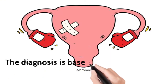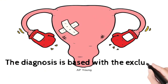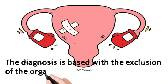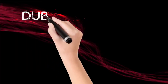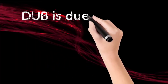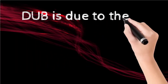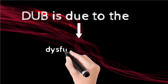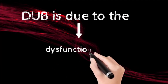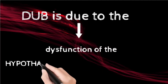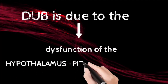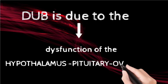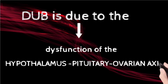The diagnosis is based on the exclusion of organic lesions. The condition of dysfunctional uterine bleeding occurs due to dysfunction of the hypothalamus-pituitary-ovarian axis.